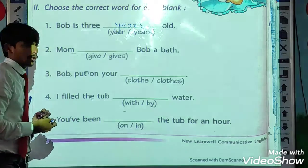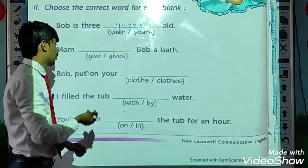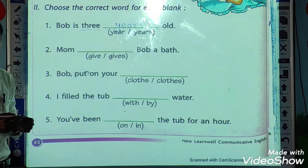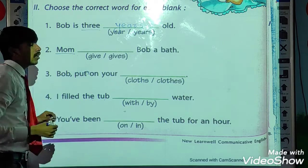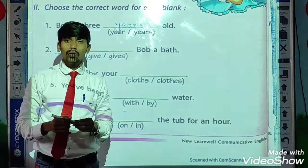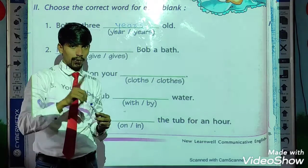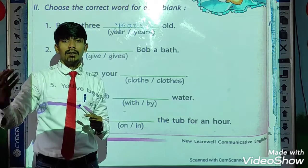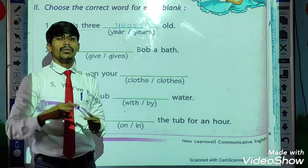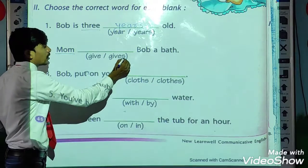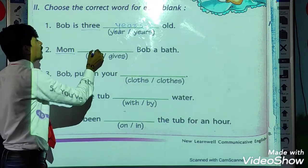Yes, we have to use 'years.' Next: Mom dash Bob about something. The choices are 'give' or 'gives.' Now when we are talking about a singular third person — we are talking about mom. Mom is one and she is another person, not me, not you. So for that we add 's' to the verb. Mom gives.